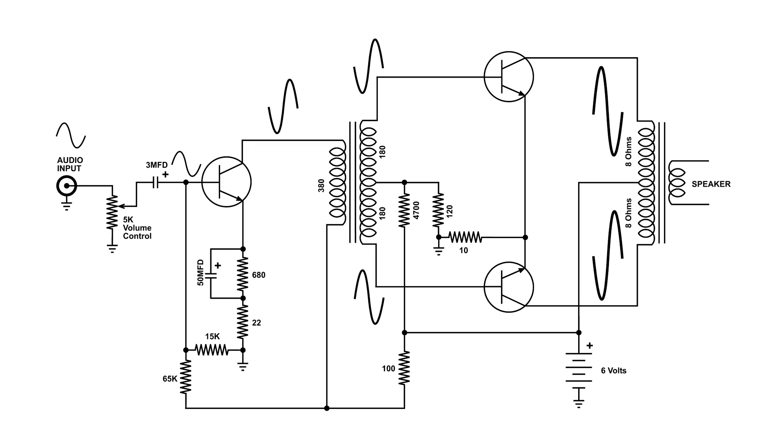Now this is where the push-pull comes in effect. I'm going to mark the output transformer like this. Put a green dot on the top of the transformer, the lead, and a red one at the bottom.